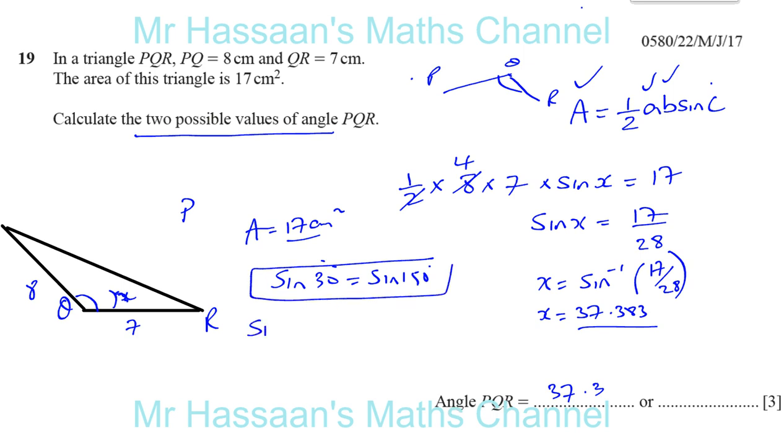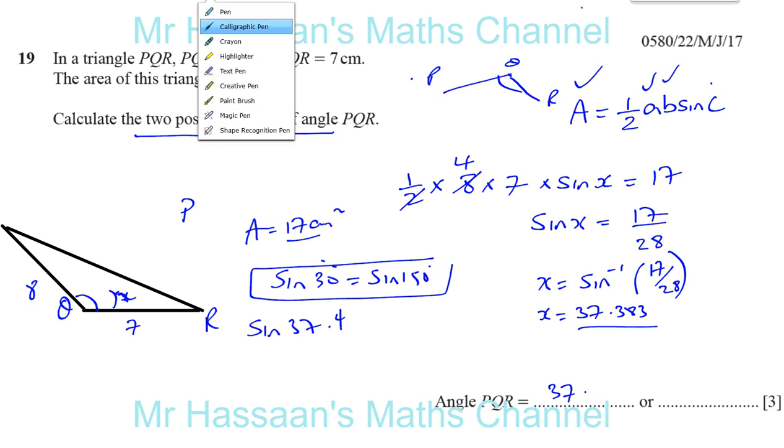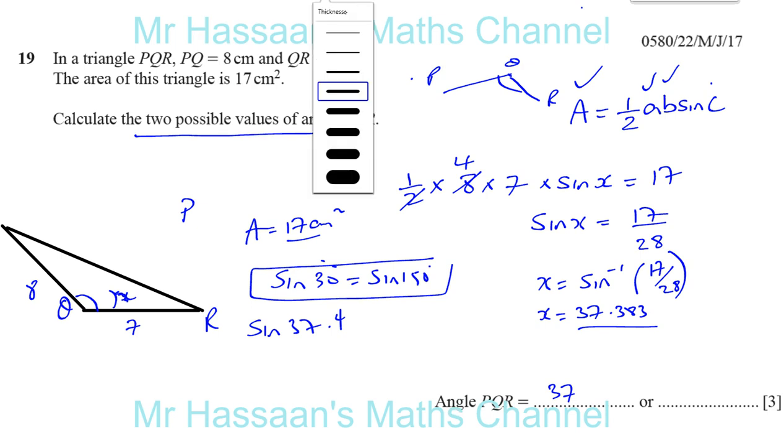Therefore, there's the sine of 37.4, sorry, that's a bit of a mistake there I made. That should say 37.4, by the way, because it's rounding to one decimal place. We always make sure we got it right at the end. That's 37.4 because it's 37.383. So, it's 37.4. That's the first thing.